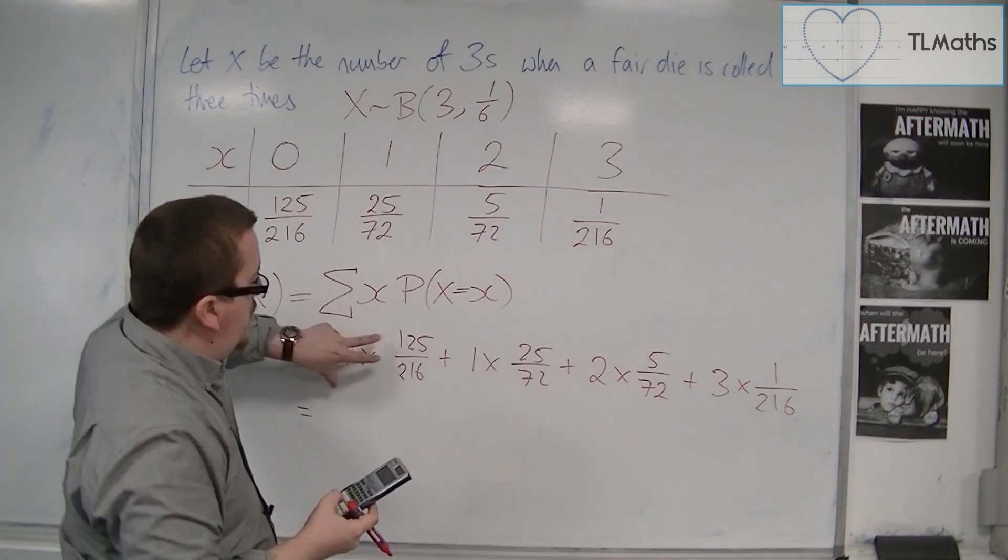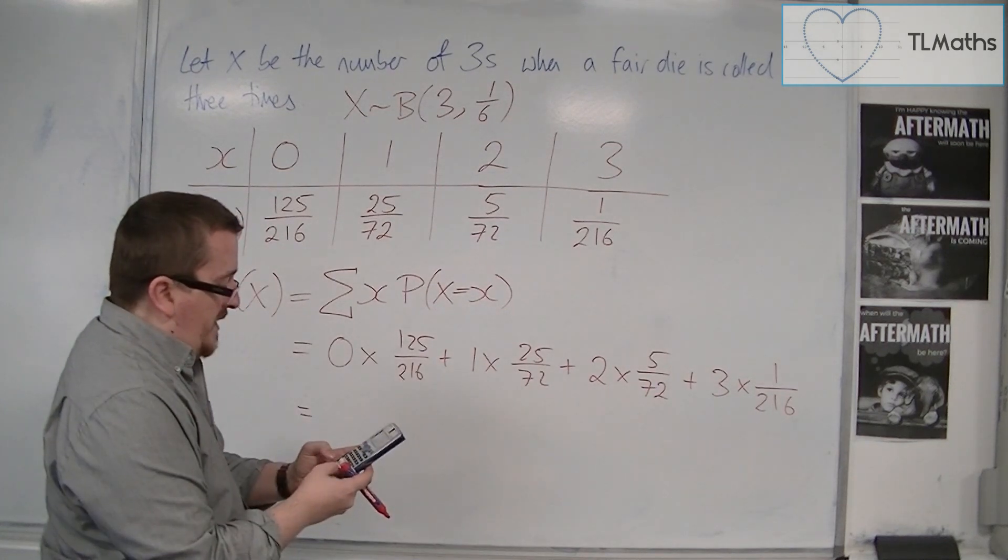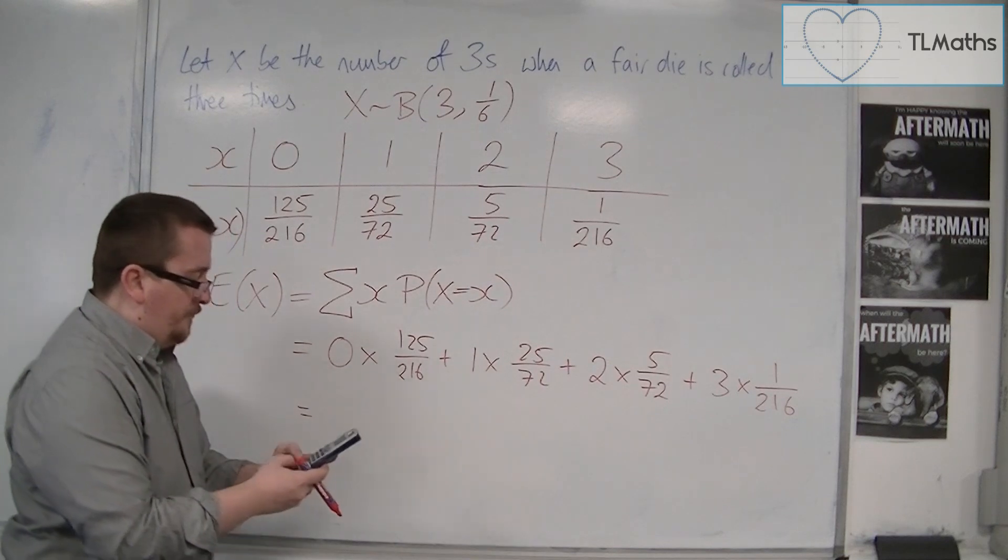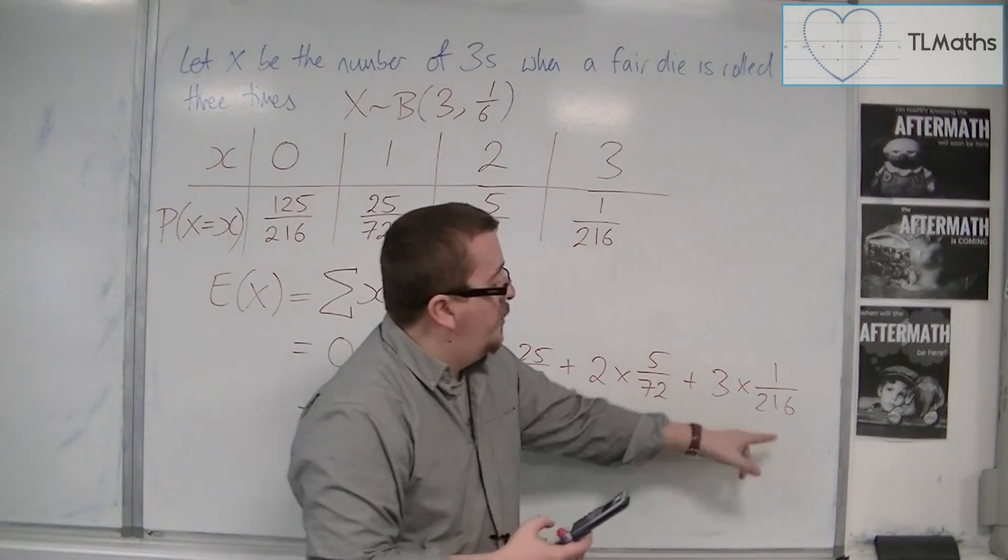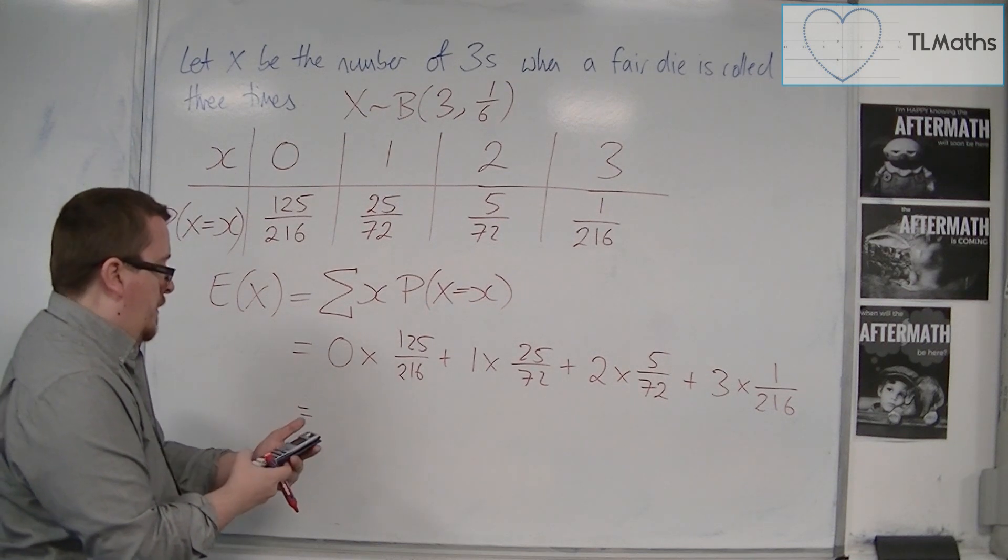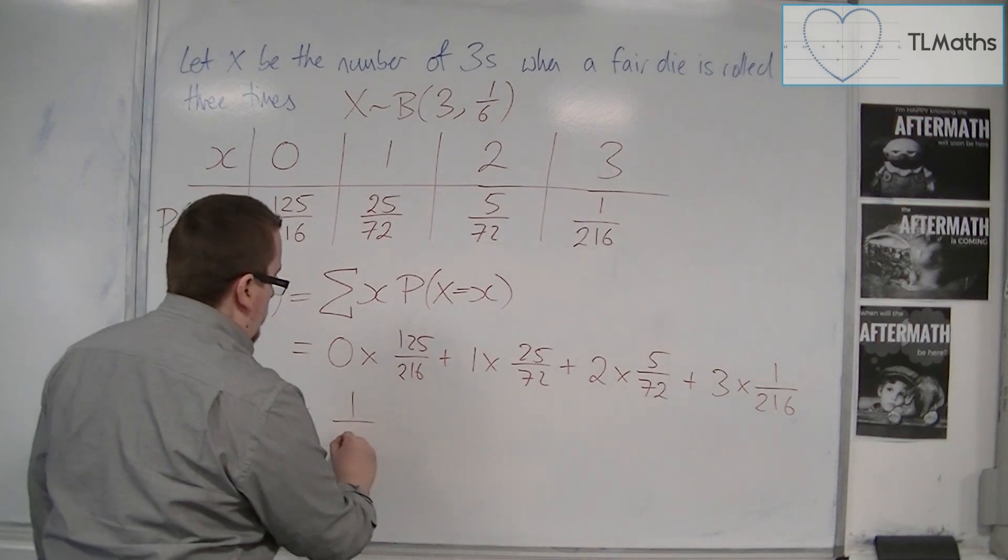We've got this, that's 0, that's 25 over 72, and then we've got 10 over 72, and then we've got 3 over 216. And we get 1 half.